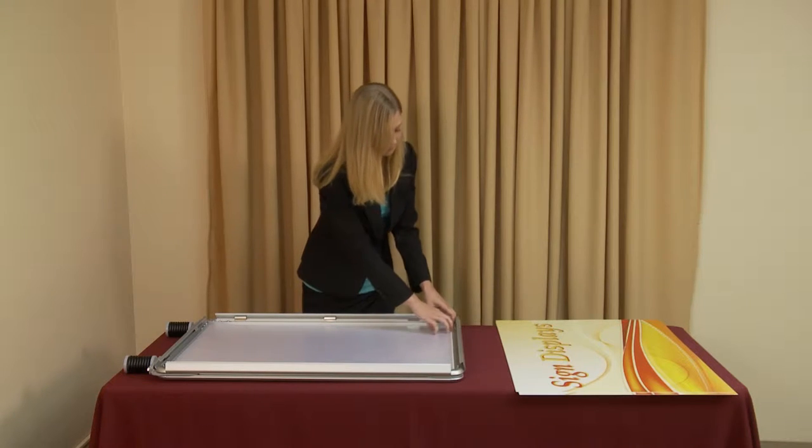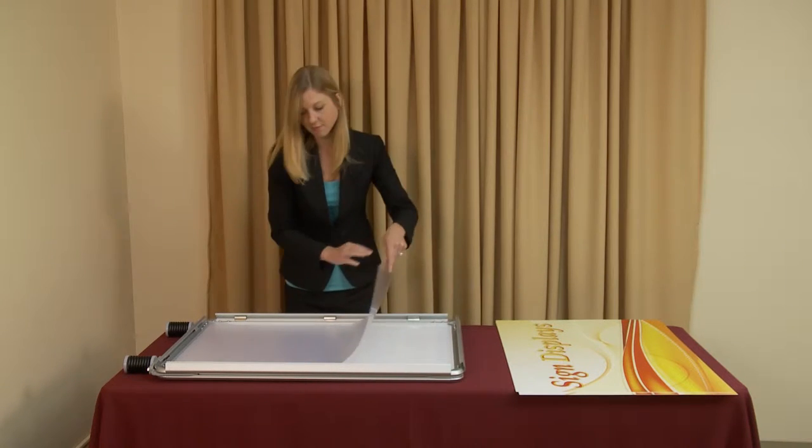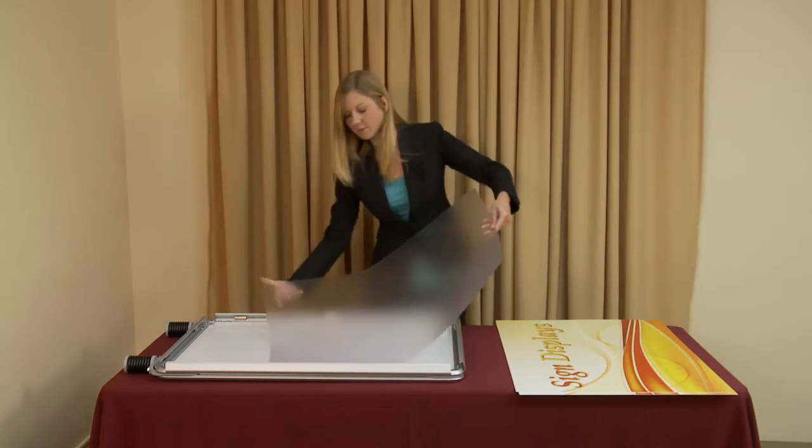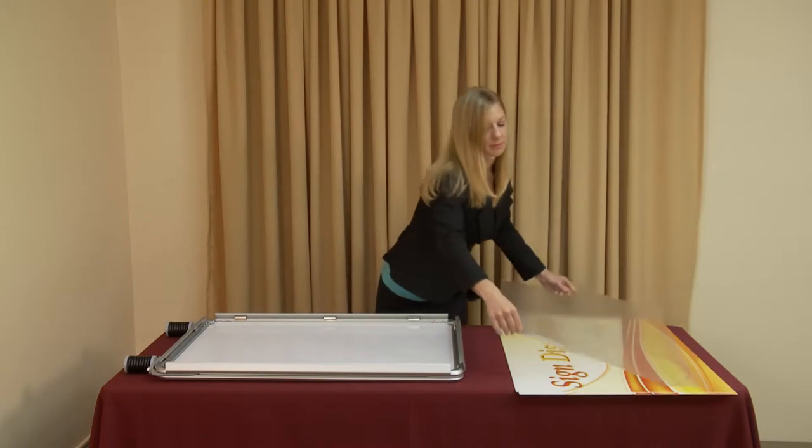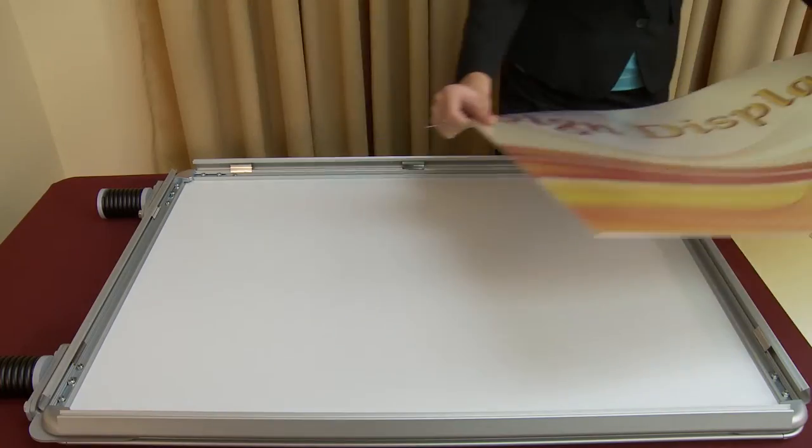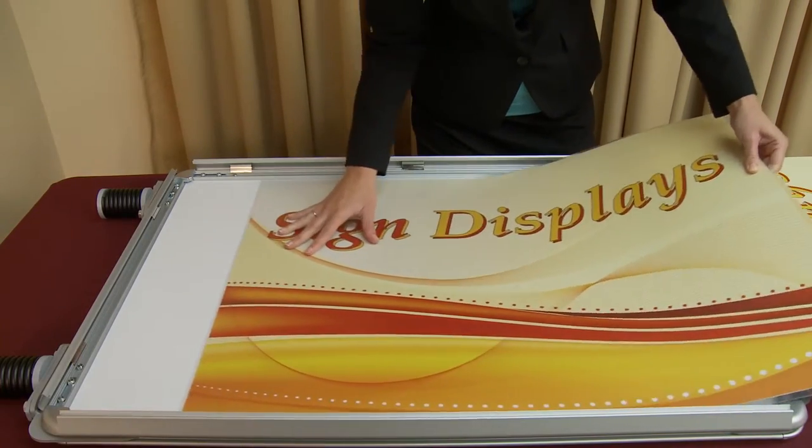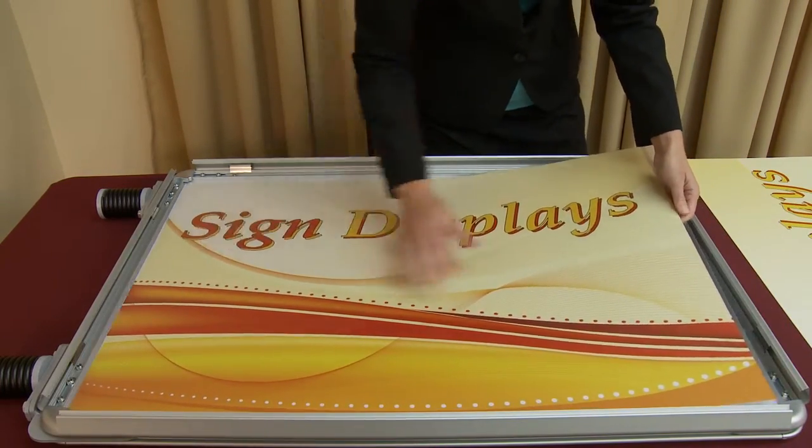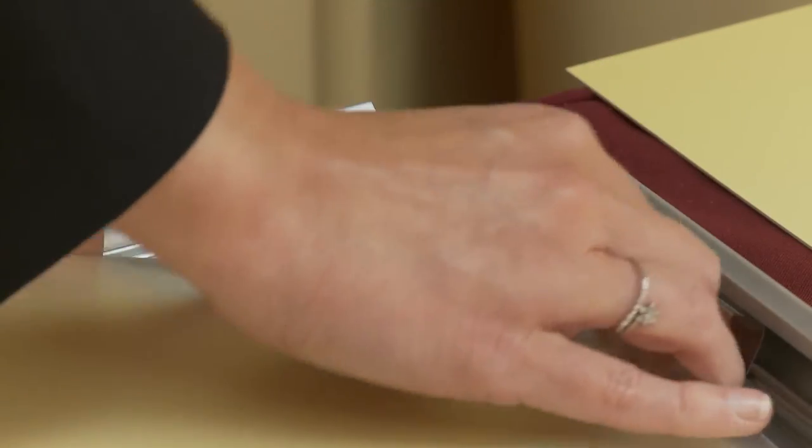Remove the protective film and align it over the printed side of your graphic. Once set, slide your covered graphic into the display's frame with all four corners secured under the frame's four corners.